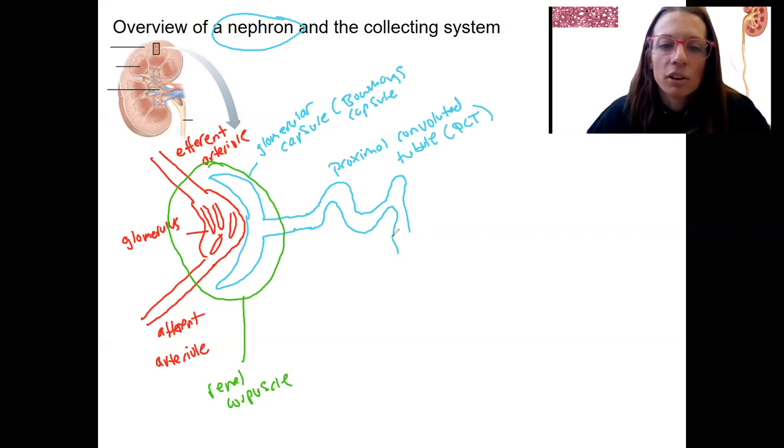We're then going to have a nephron loop. It's going to dip down, have a thin portion and a thick portion.